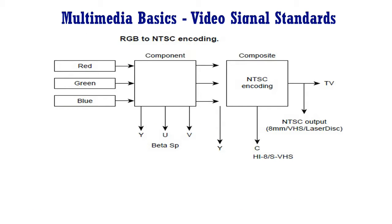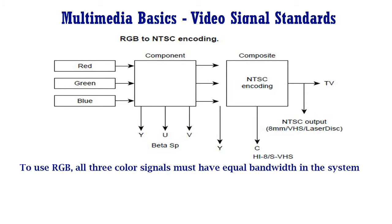This figure traces an analog video signal from capture to NTSC output. On the far left is the RGB capture, in which separate channels are maintained for each of the three primary colors. RGB, however, is an inefficient analog video storage format for two reasons. First, to use RGB, all three color signals must have equal bandwidth in the system, which is often inefficient from the system design perspective.